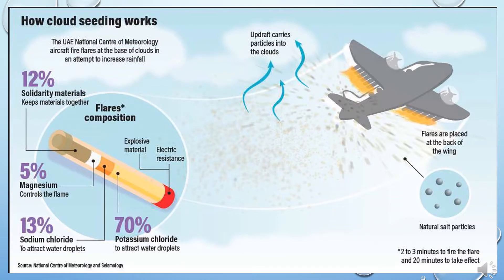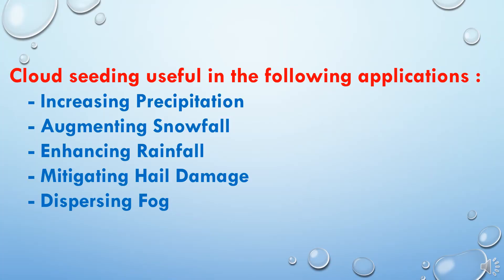Here we have shown the diagrammatic presentation of how cloud seeding works. Cloud seeding is useful in the following applications: first, increasing precipitation; second, augmenting snowfall; third, enhancing rainfall; fourth, mitigating hail damage; and fifth, dispersing fog.